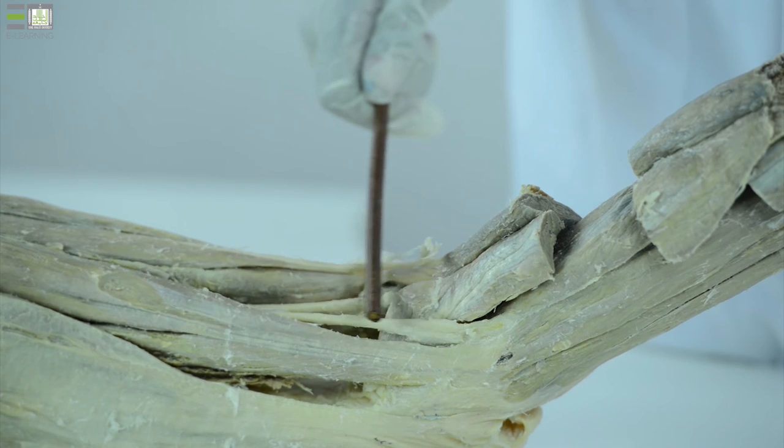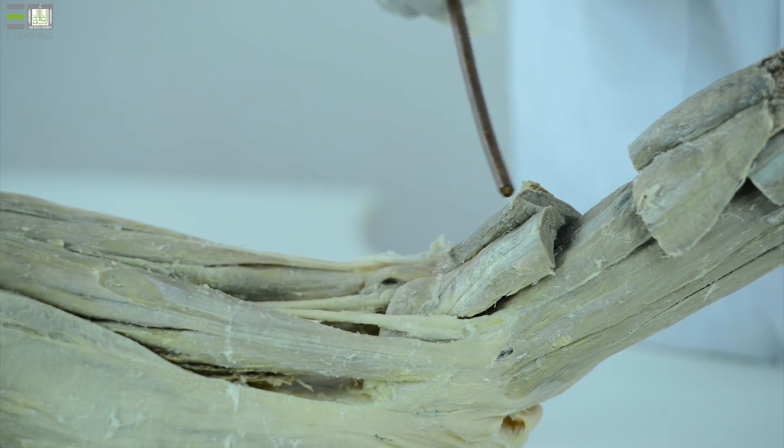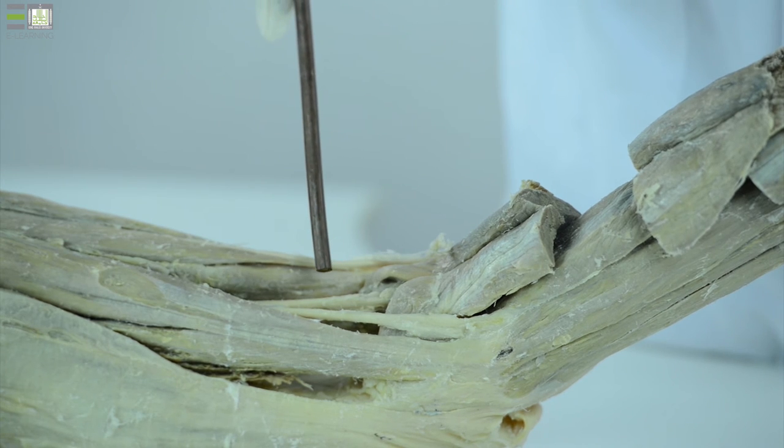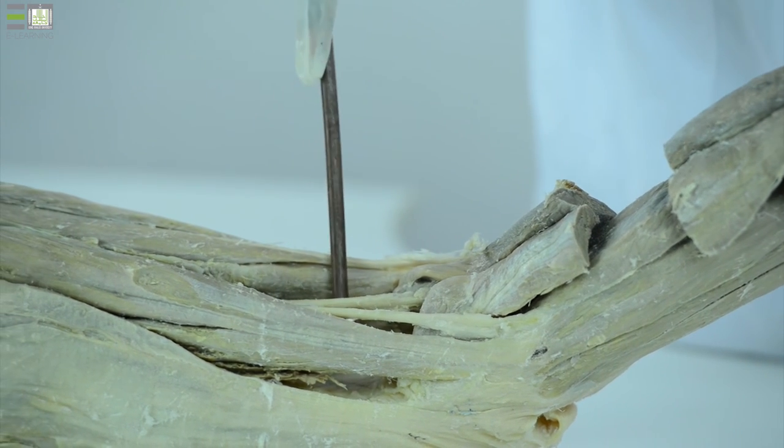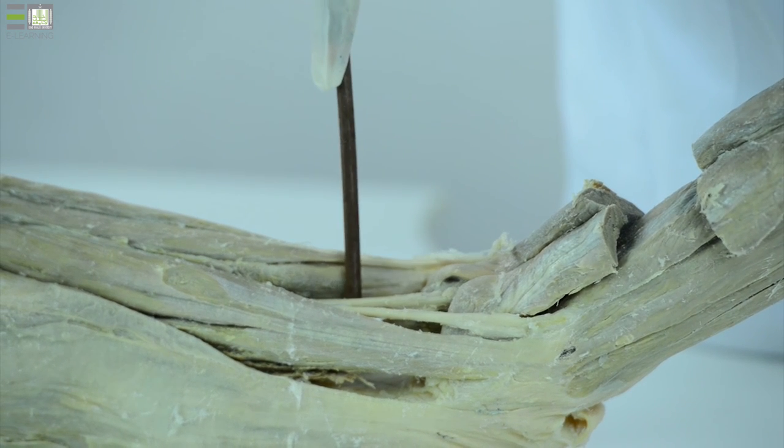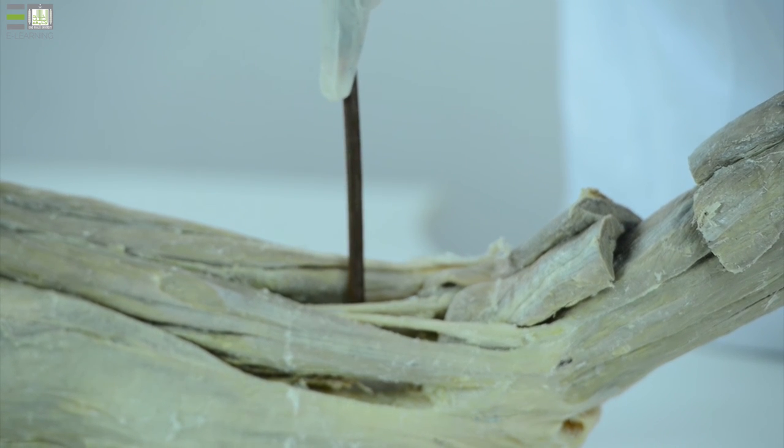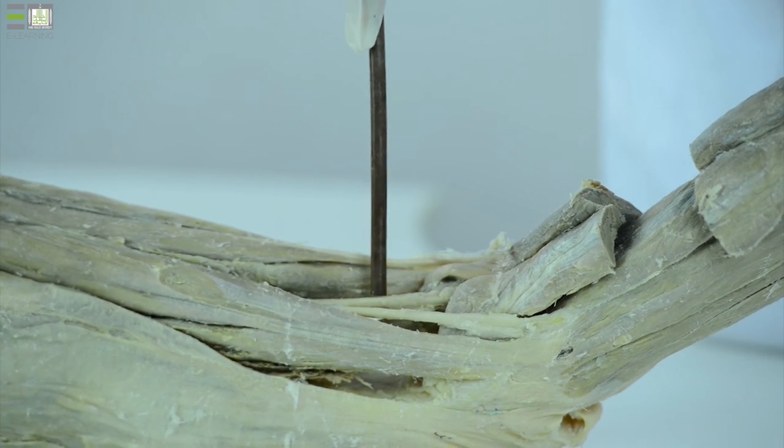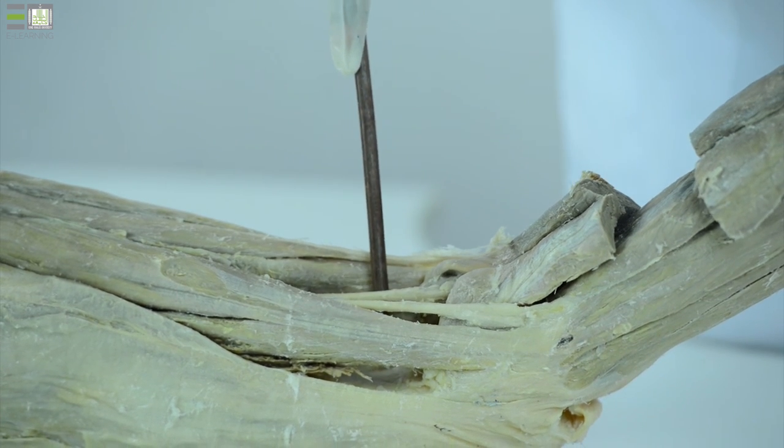The fossa is roofed by deep fascia, and within the superficial fascia, we can find the small saphenous vein entering the roof to end in the popliteal vein. Deeper, embedded within the fat and the floor, are the popliteal vessels. The popliteal artery lies in direct contact with the popliteal surface. There is a group of lymph nodes called popliteal lymph nodes within this important area.